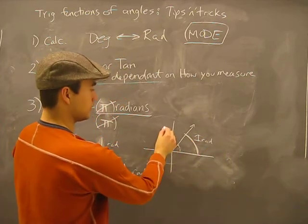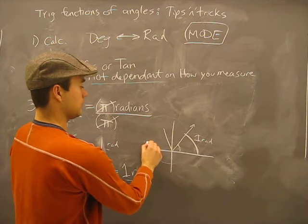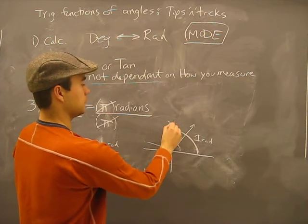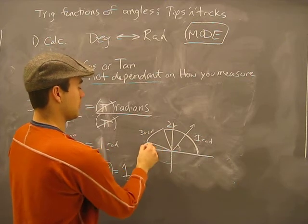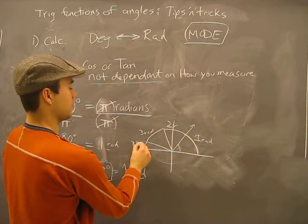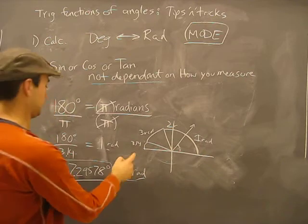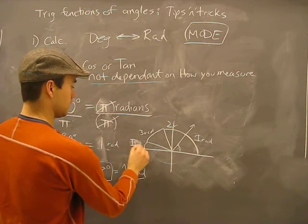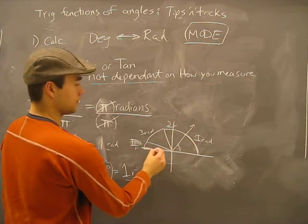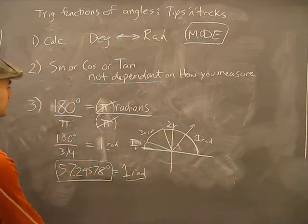And remember, there will be 2 radians somewhere in there, there will be 3 radians, and by the end of here, you'll be at 3.14 radians, which is π radians. So that's how this all comes to be.